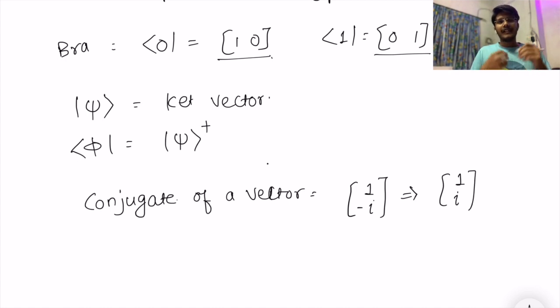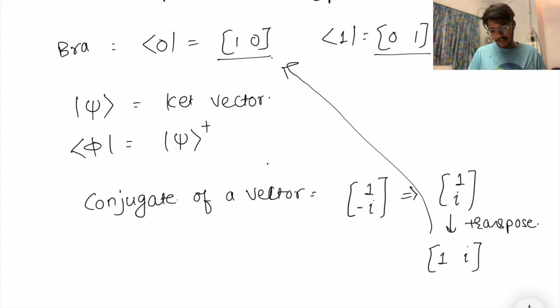And what is the transpose? Transpose is simply changing column vectors to row vectors. And if you convert its transpose, then it will be simply one and i.